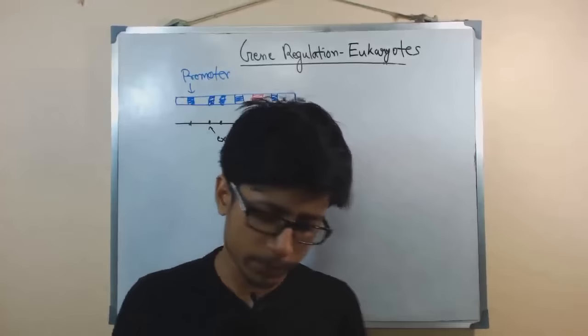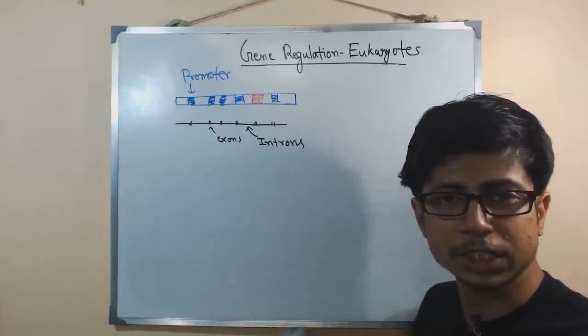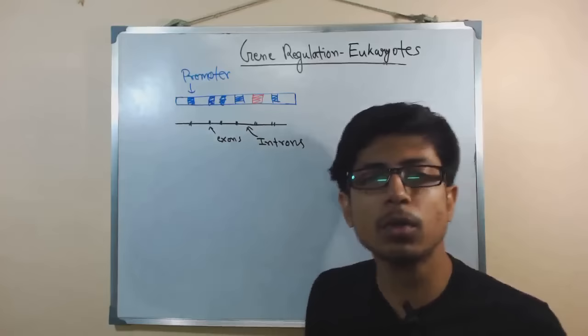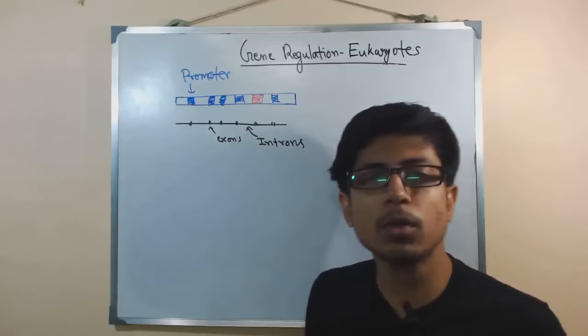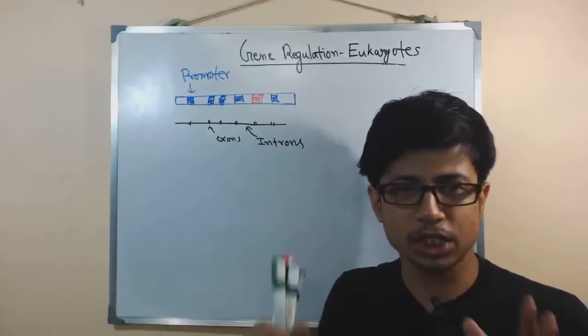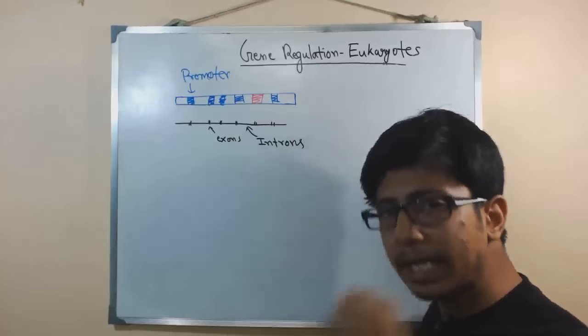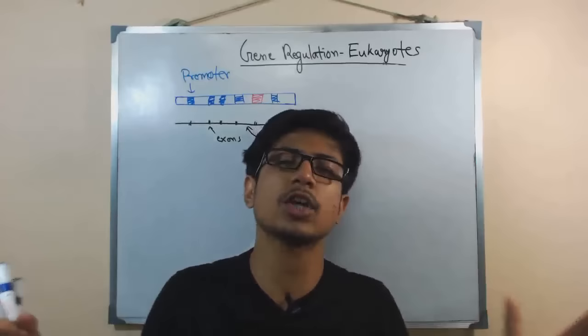These are the structural differences between prokaryotic and eukaryotic genes. We have exons and introns — exons are the sections of the gene that code for protein, while introns are the sections that don't code for any proteins. They just sit there and are called the junk elements of the DNA in eukaryotes. Since exons are the only coding sites, the idea is to join all the exons and leave all the introns out, and that process is called splicing.